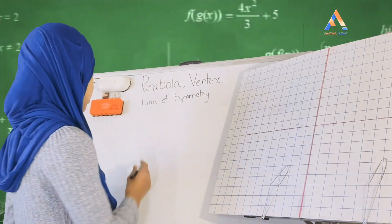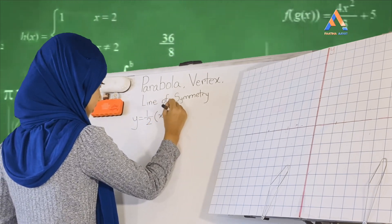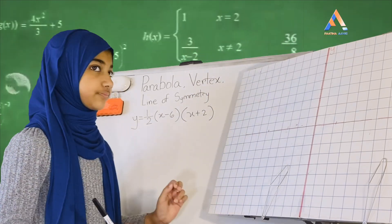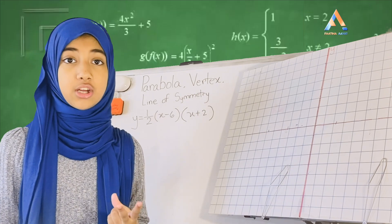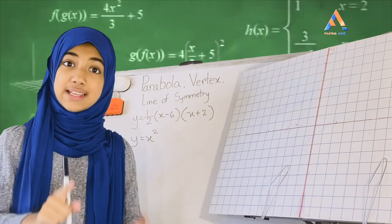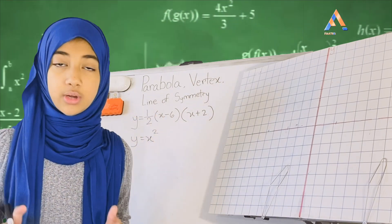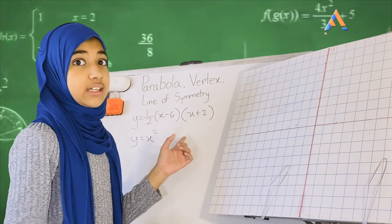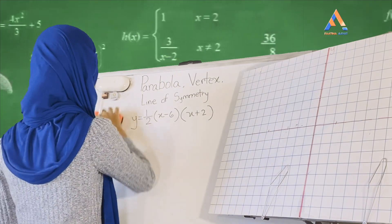So let's say my equation is y = ½(x − 6)(x + 2). This is just an example. Now, you will understand that this is a parabola when you see a second-degree term. This x² is a second-degree term because it has the power of two. Whenever you see a second-degree term in the equation, you know it's a parabola.